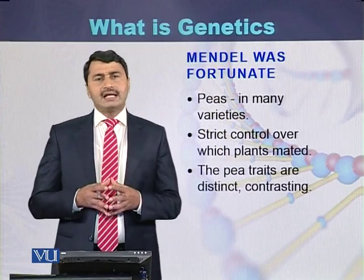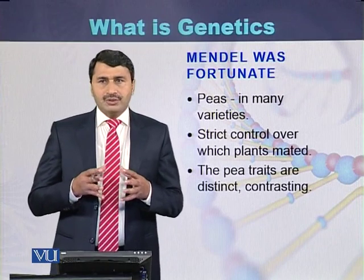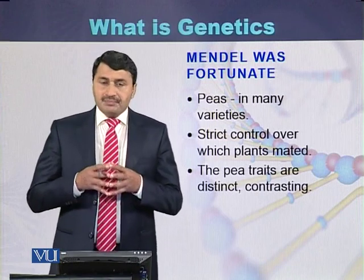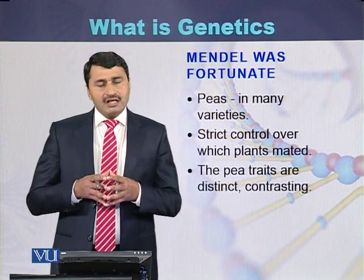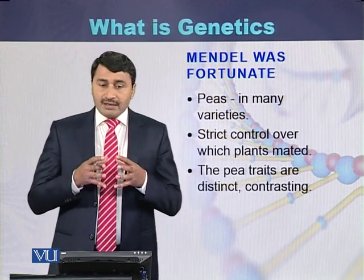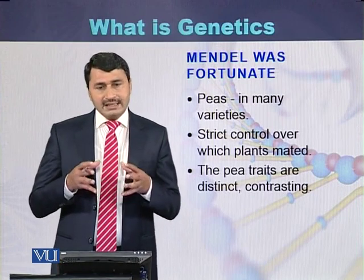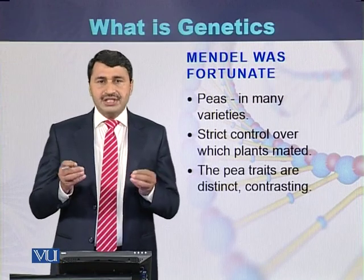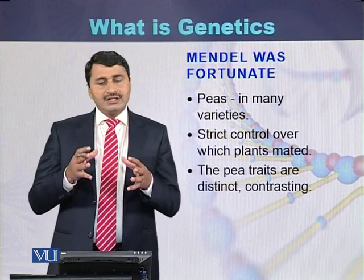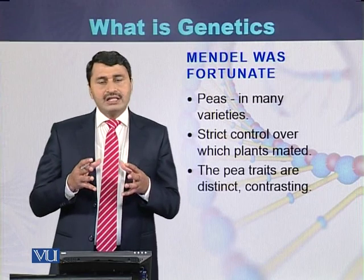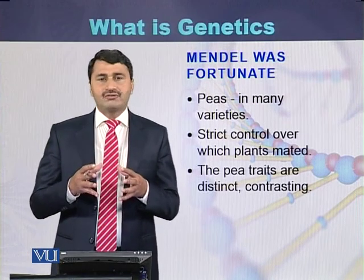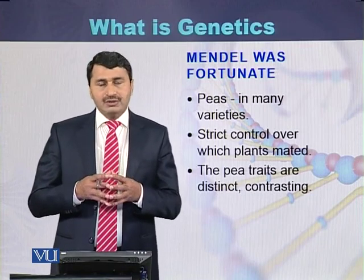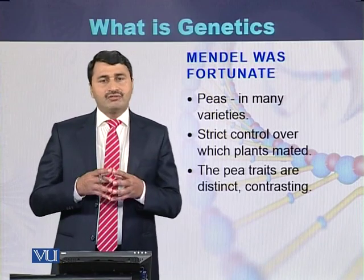It is said that Mendel was fortunate because he selected garden pea as an experimental plant, as it was available in many varieties. When Mendel was performing his genetics experiments, he had strict control over the different plants he mated, and the traits of the garden pea were clearly contrasting and distinct from each other. These were the major properties that helped Gregor Mendel in formulating the laws of heredity.